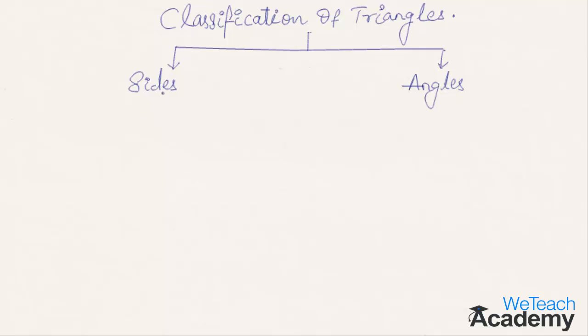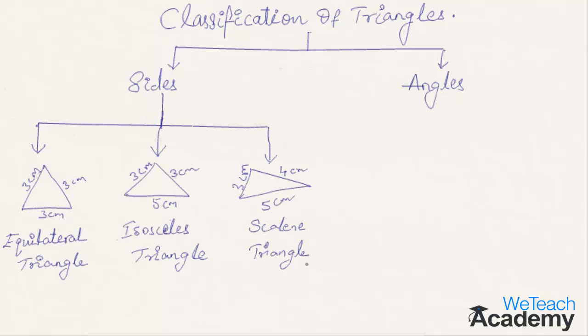Based on sides, triangles are of three types: equilateral triangle, isosceles triangle, and scalene triangle.